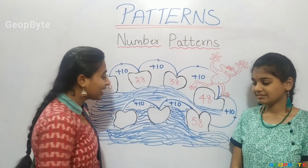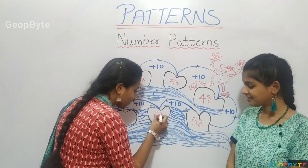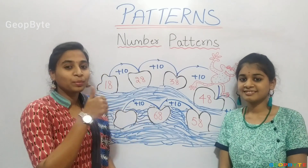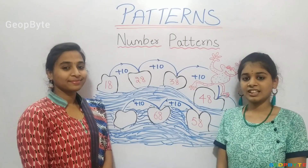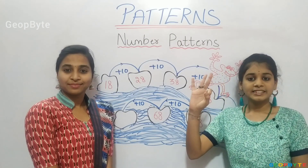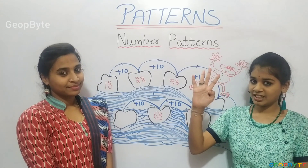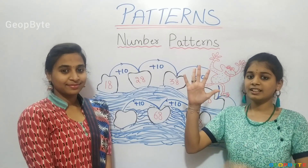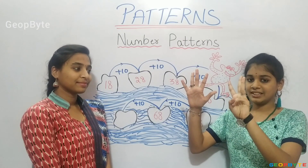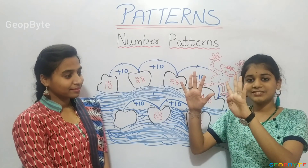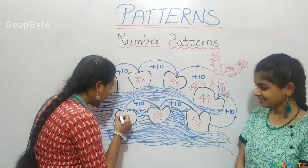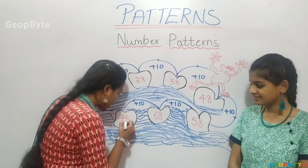Now, sixty-eight plus ten is how much? Let us count: sixty-nine, seventy, seventy-one, seventy-two, seventy-three, seventy-four, seventy-five, seventy-six, seventy-seven, seventy-eight. So seventy-eight comes in this stone.